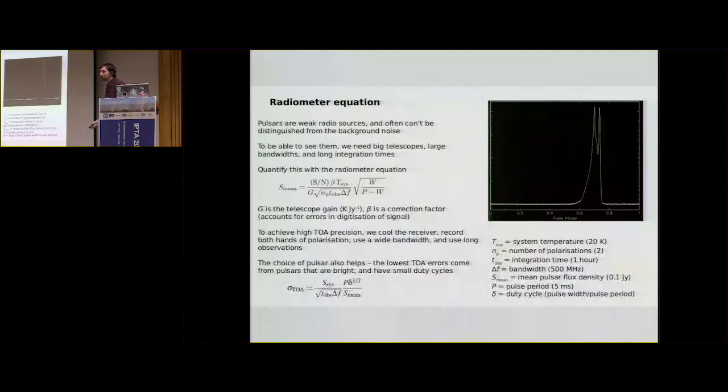We might have a system temperature of 20 Kelvin. We try to push this as low as we possibly can by cryogenically cooling the receivers using liquid nitrogen. So if you ever get up to a radio telescope, you'll kind of hear some sort of oscillating, pumping sound. That's usually the cryogenics that you're hearing. We record both polarizations.